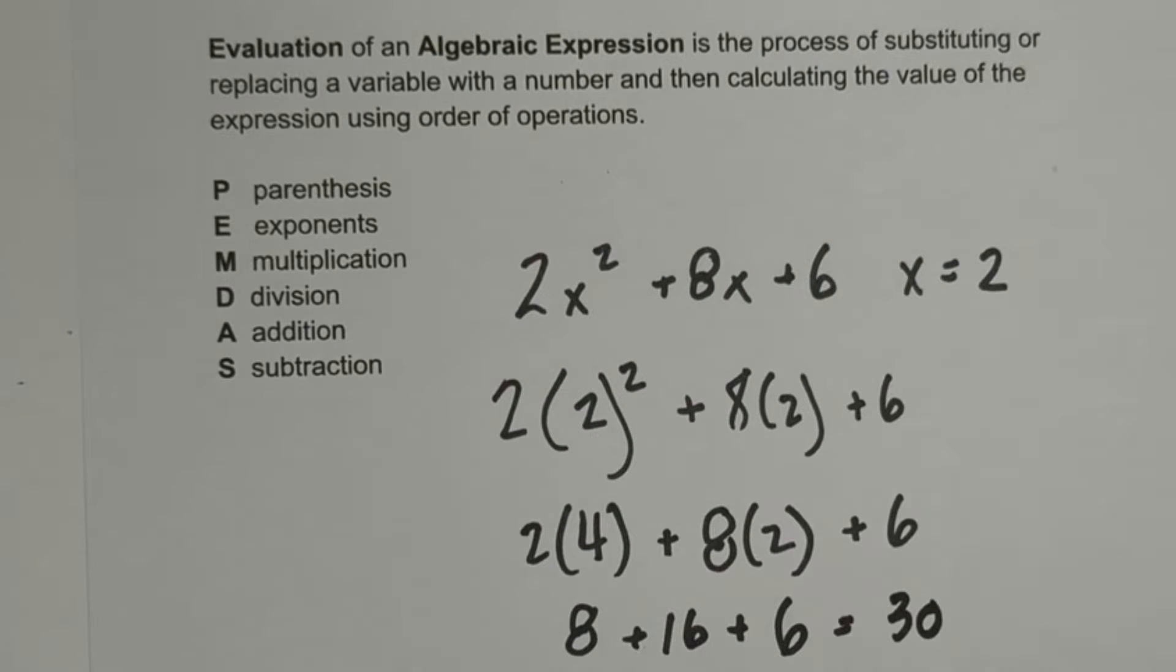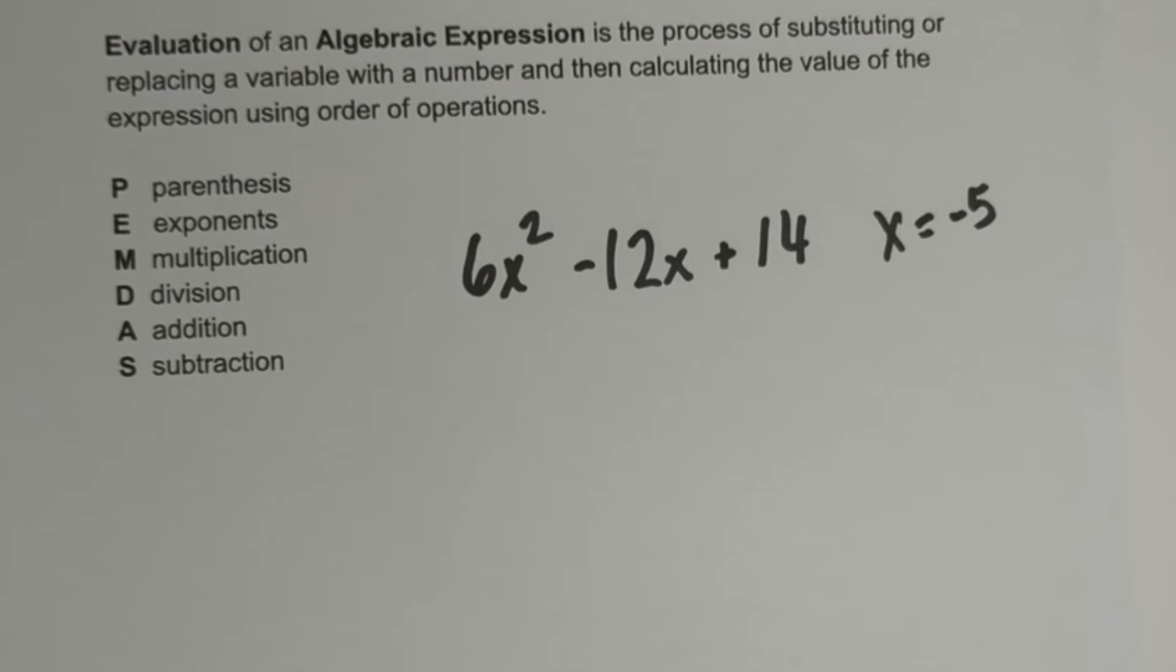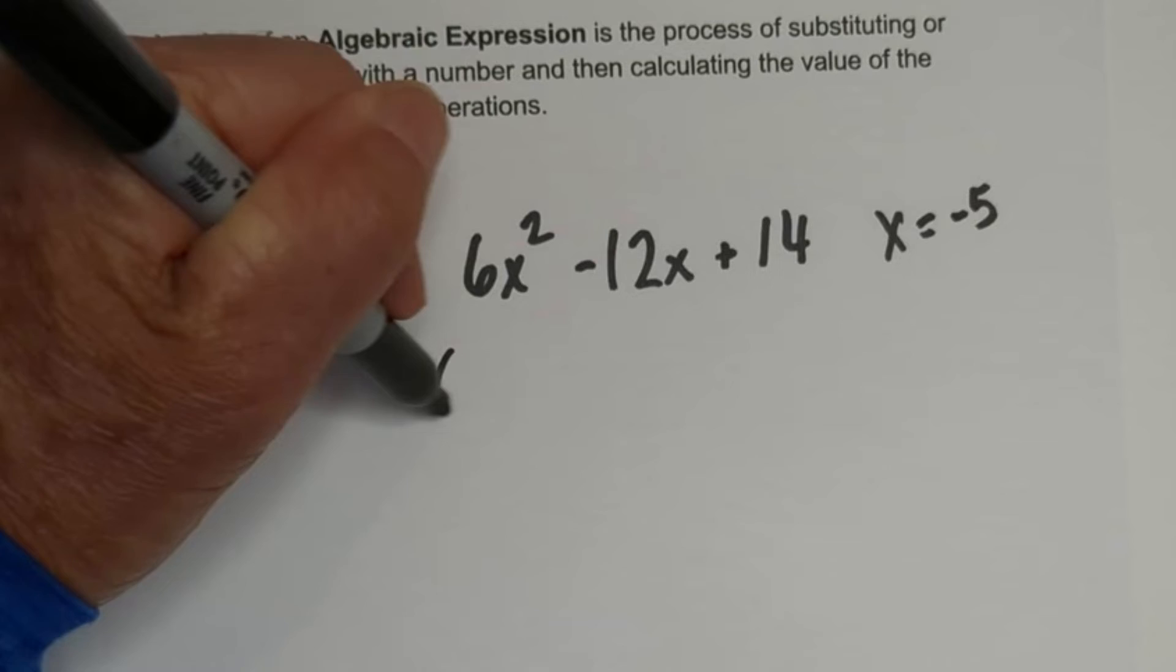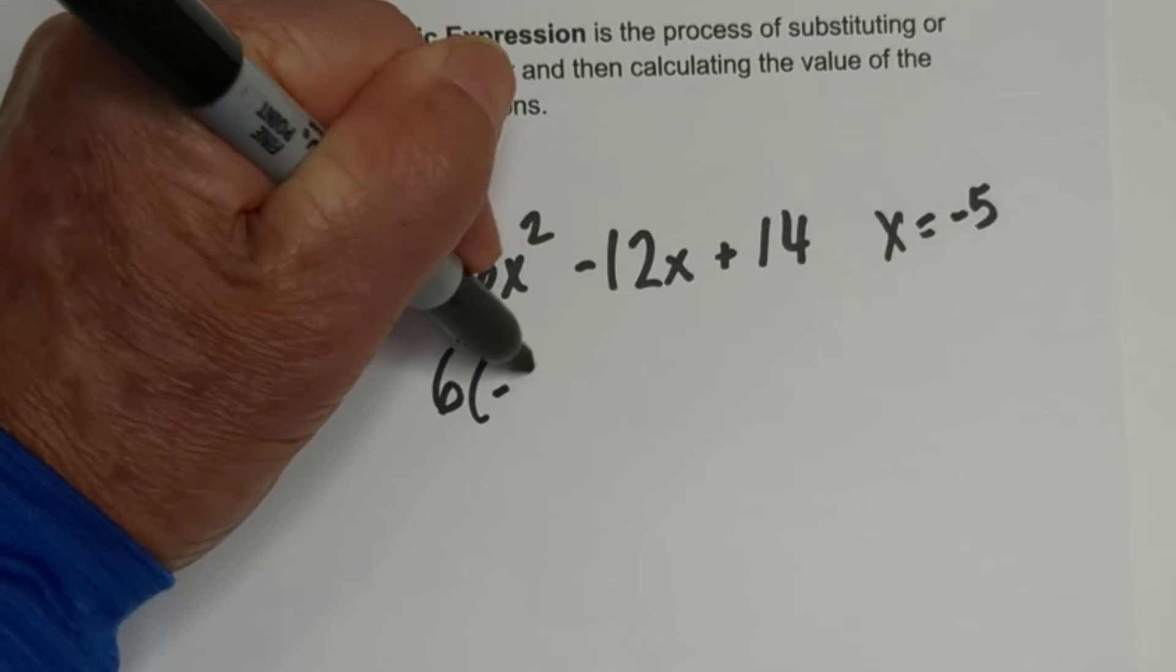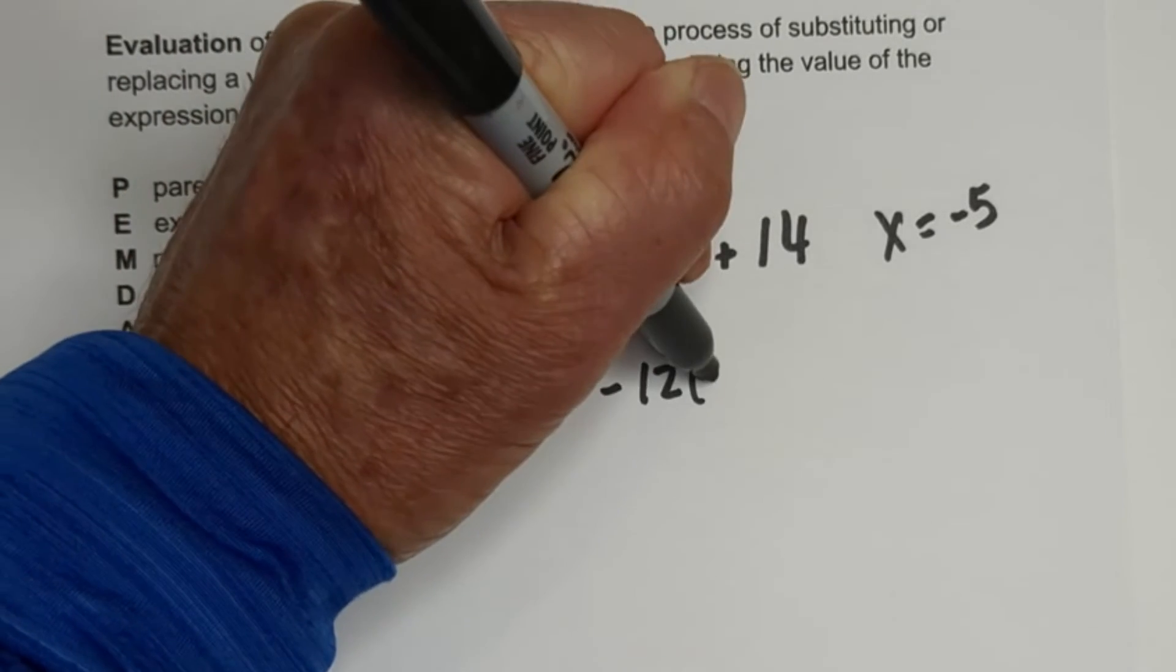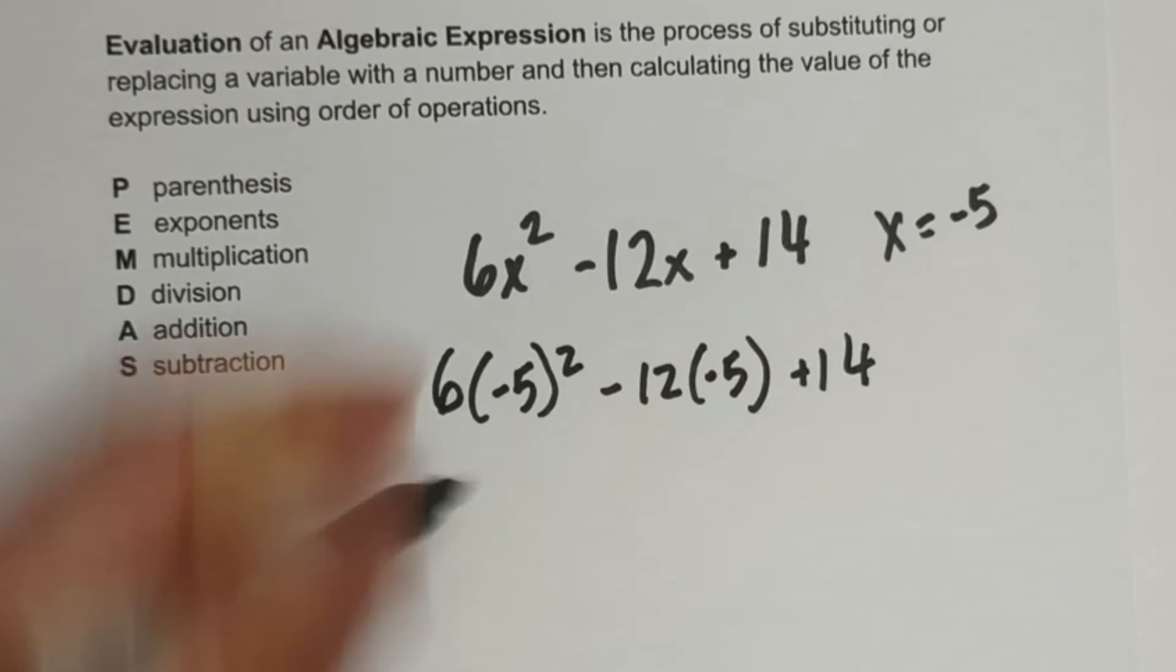Let's work another example. Let's go ahead and do the same thing. So let's get started. Let's plug in the x. So we're going to have 6 times (-5)² minus 12 times (-5) plus 14.